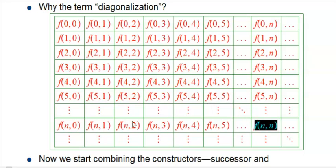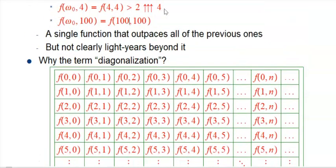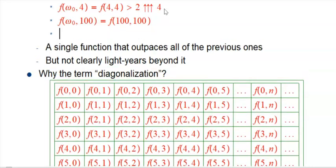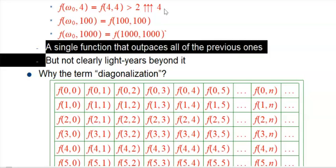What we're doing is the f of ω₀ function takes the diagonals. Because it goes at every stage from one row to the next, it is going to be faster growing than any of the individual functions. No matter how big a fixed number I put in here—if I say I'll outpace it with the f of 100 function—no, because f of ω₀ goes way beyond what the f of 100 function is going to do.